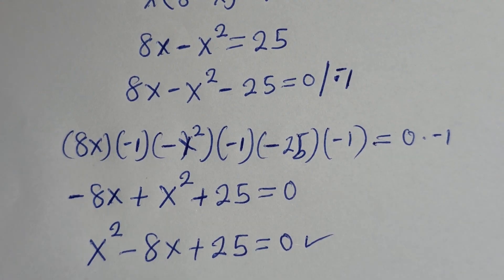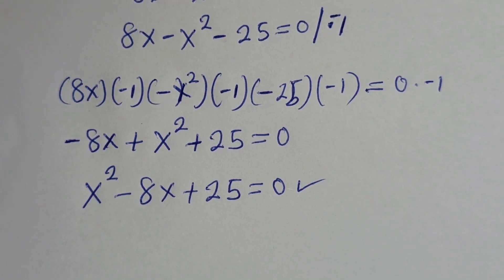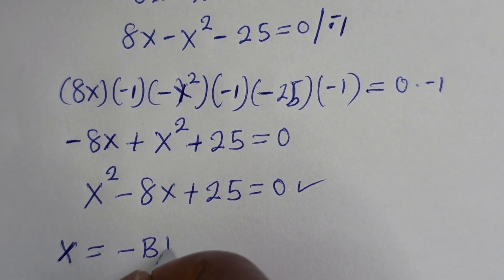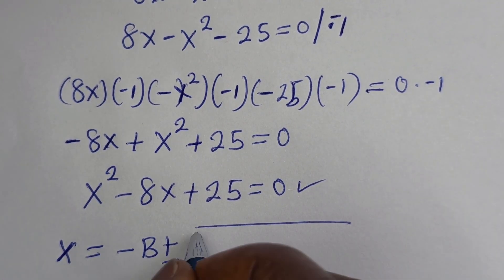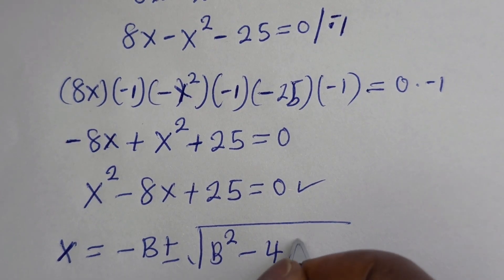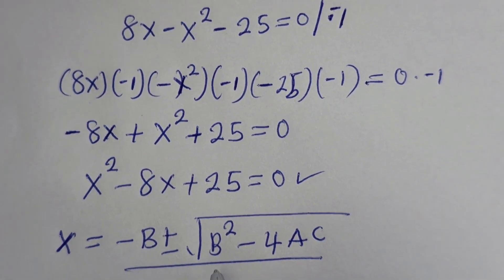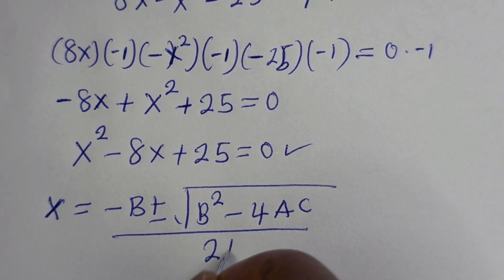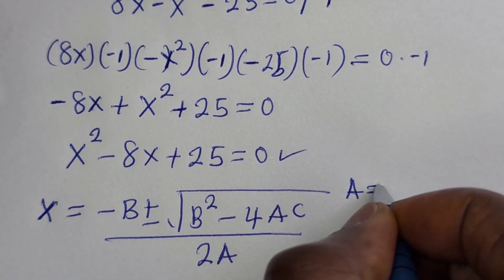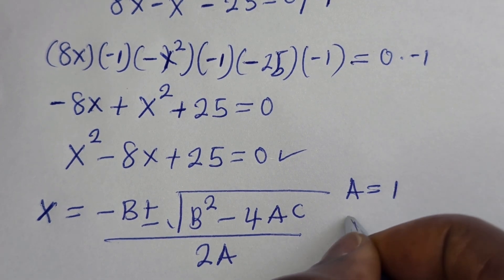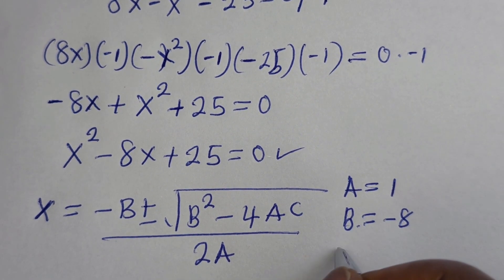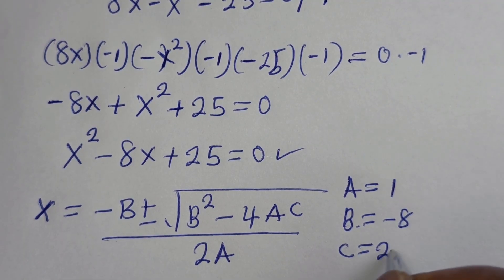This is a quadratic equation. Let's solve using the quadratic general formula: S equals minus B plus or minus square root of B squared minus 4AC, all over 2A. From our equation, A is equal to 1, B is equal to minus 8, and C is equal to 25.